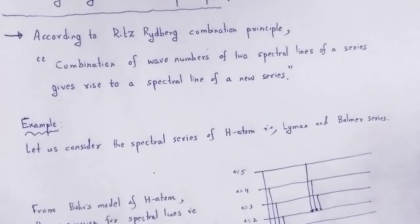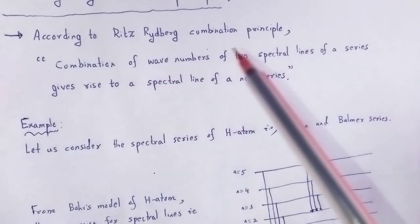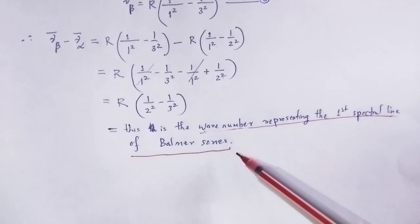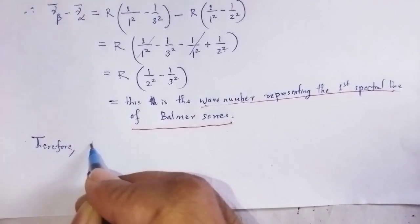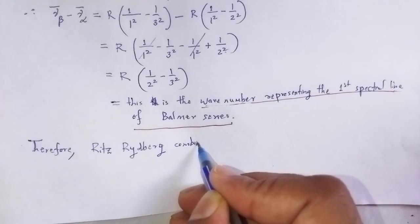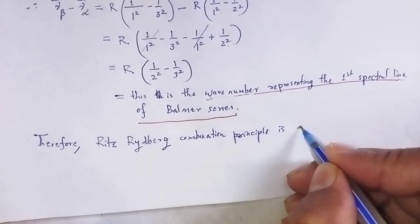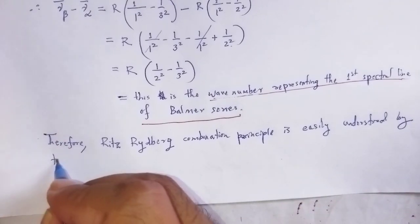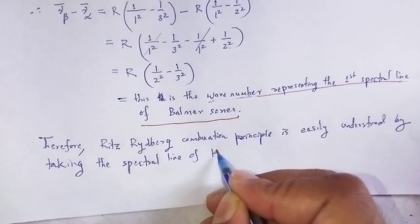That is why, as proposed by Ritz's Combination Principle, the combination of wave numbers of two spectral lines of a series gives rise to a spectral line of a new series. The combination of two spectral lines of the Lyman series gives rise to the first spectral line of the Balmer series. Therefore, Ritz's Combination Principle is easily verified using the spectral lines of the hydrogen atom.